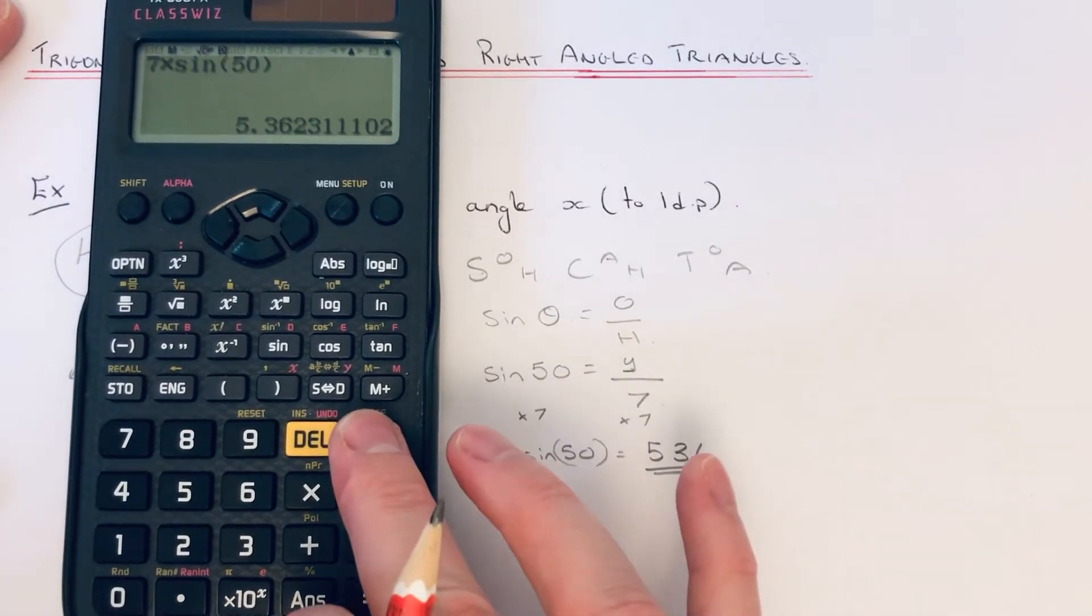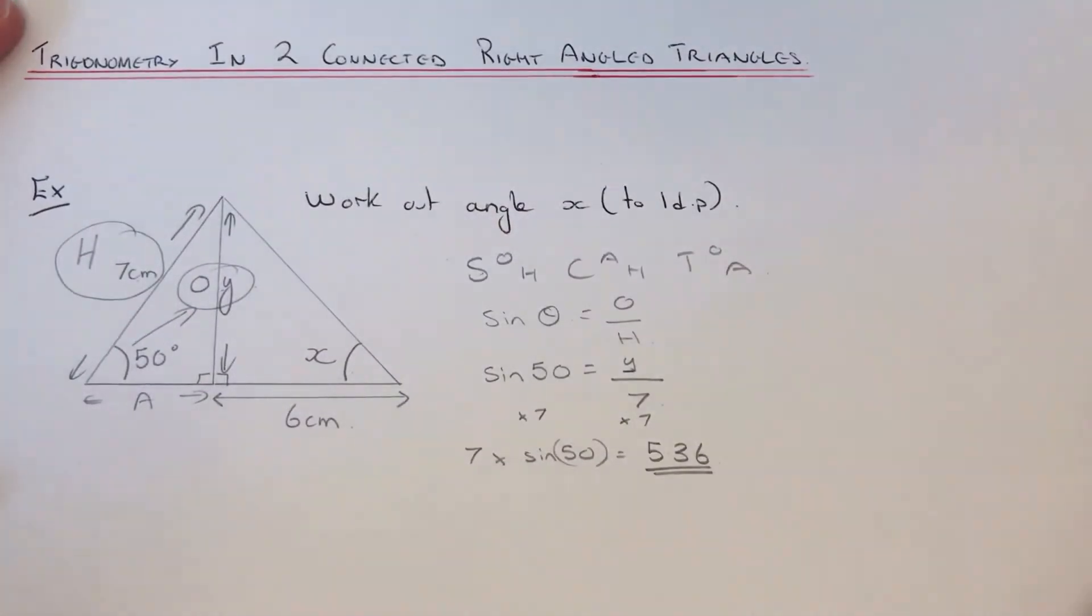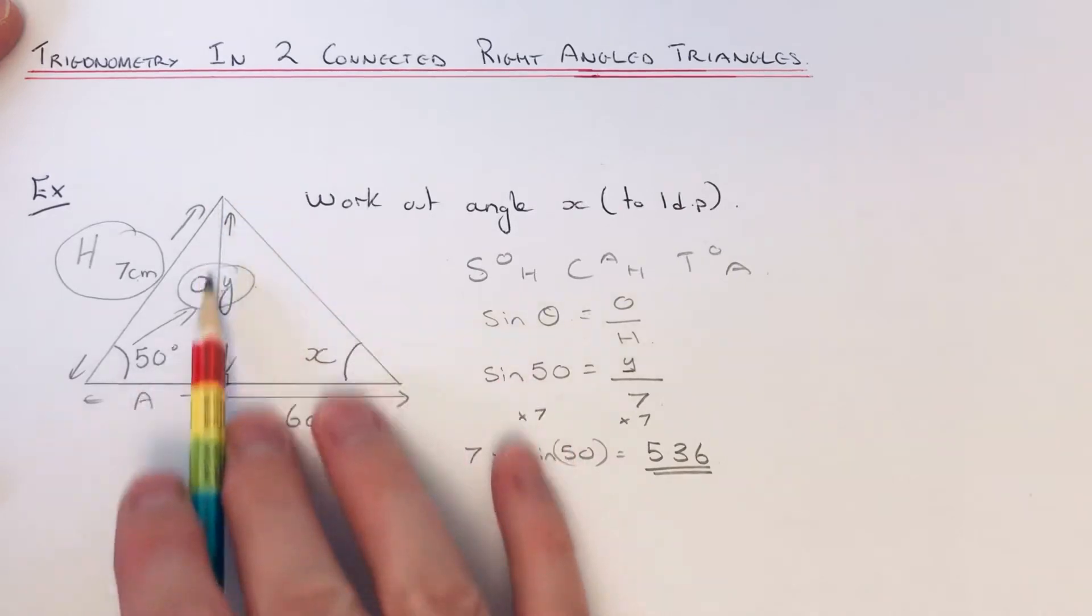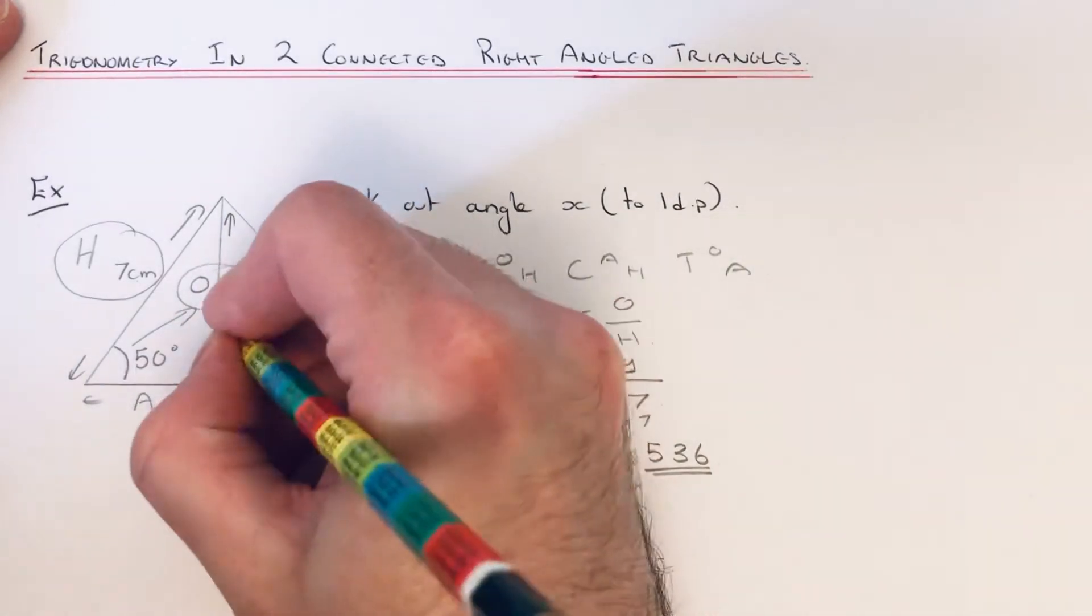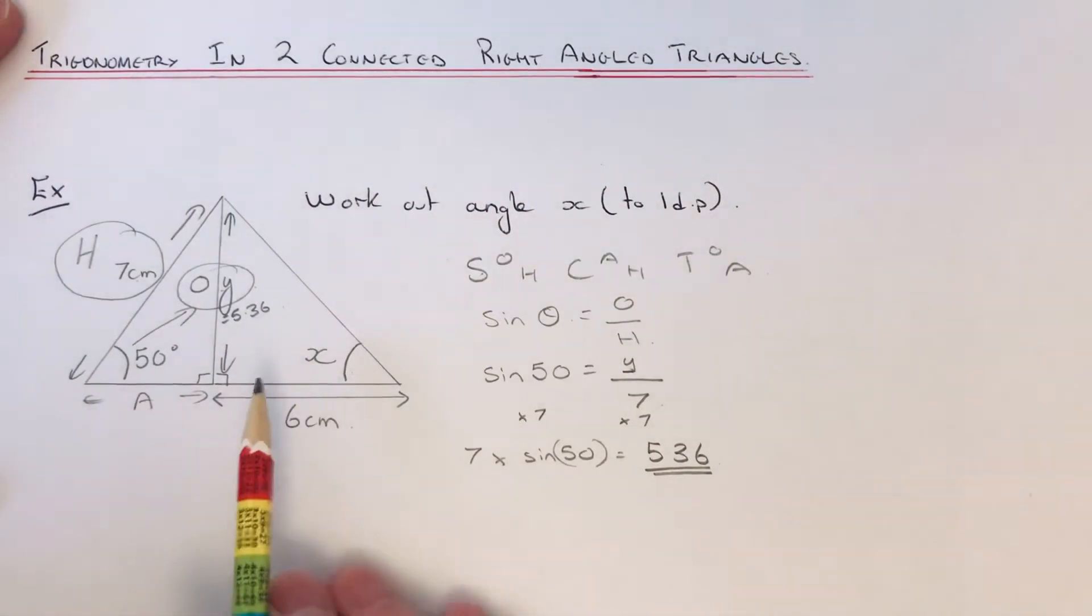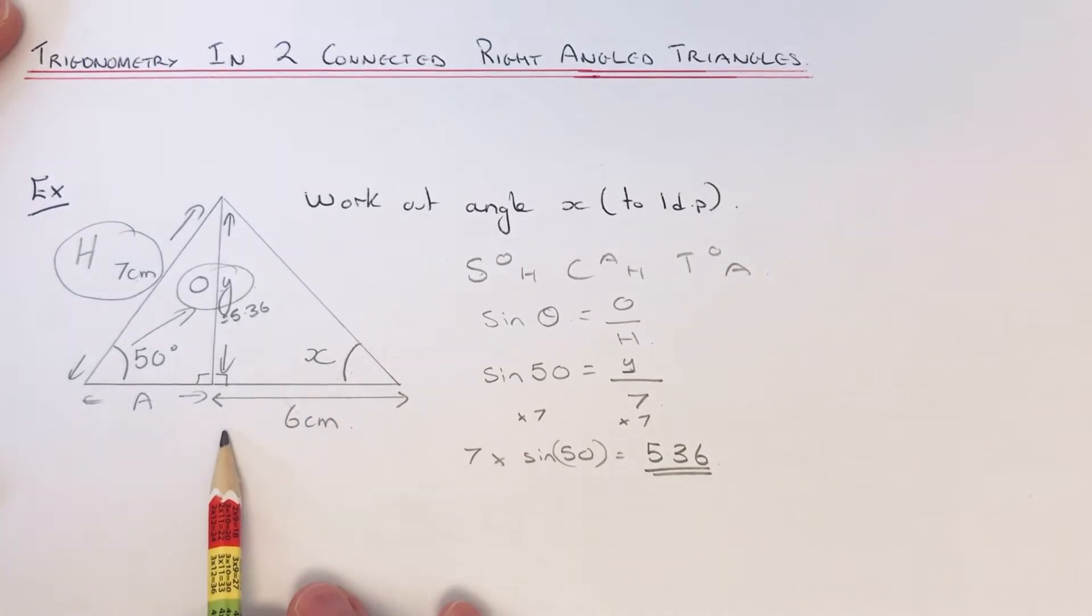We can now focus on the right hand side. We've got Y which is 5.36, so we have two sides of this right angle triangle and we need to find the angle this time. This would again be a trigonometry question, so again if we label up our triangle.